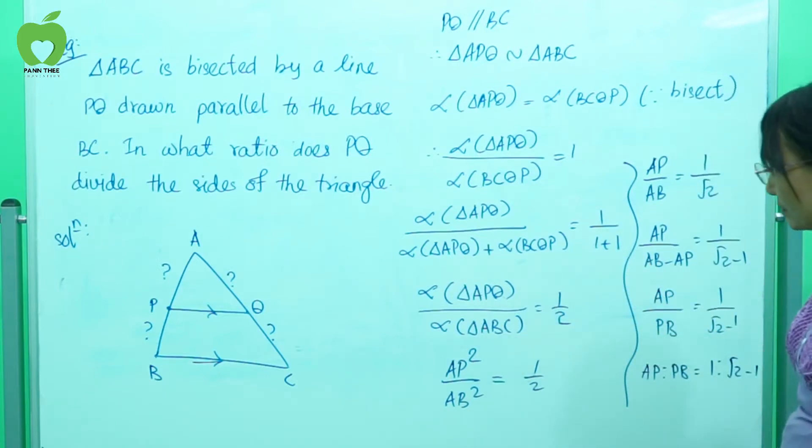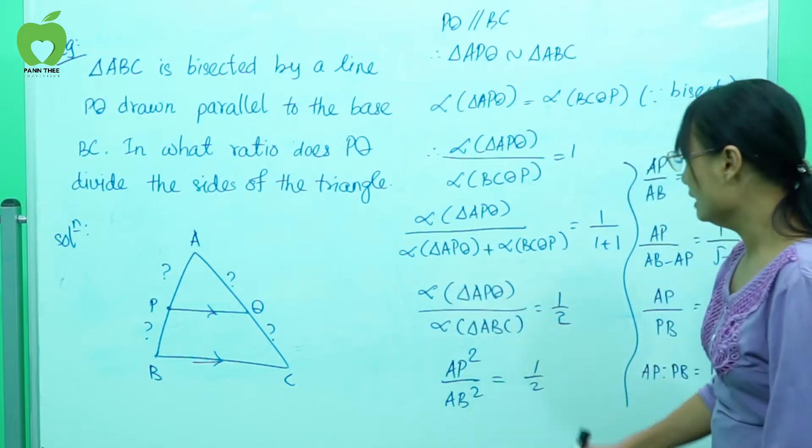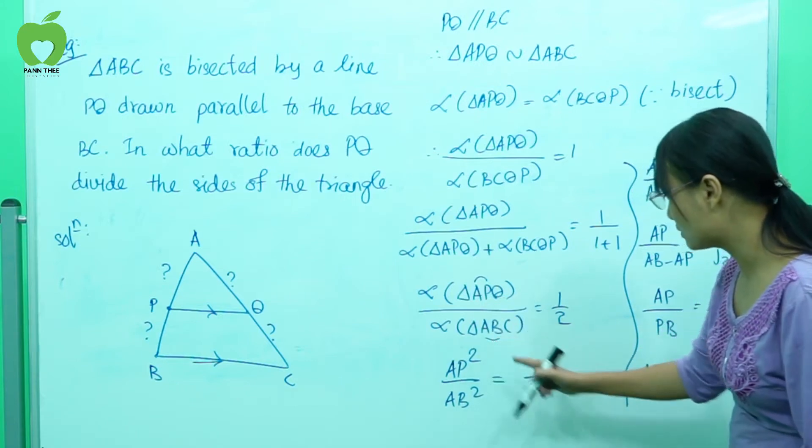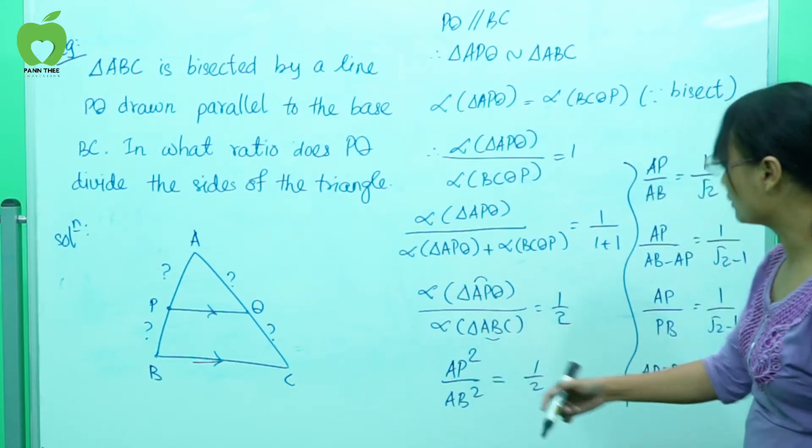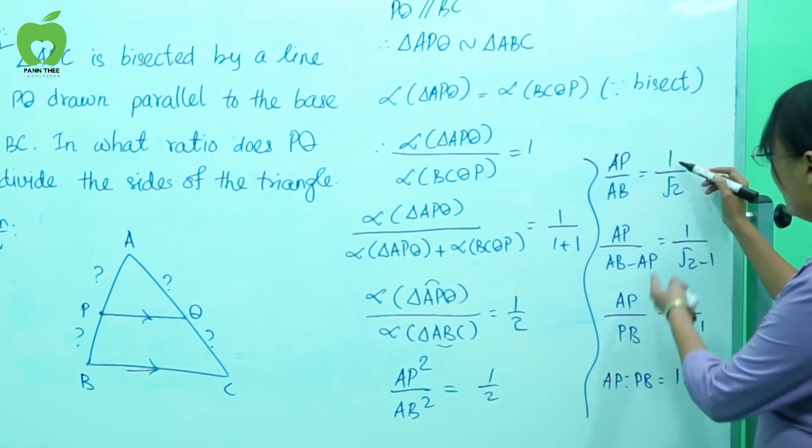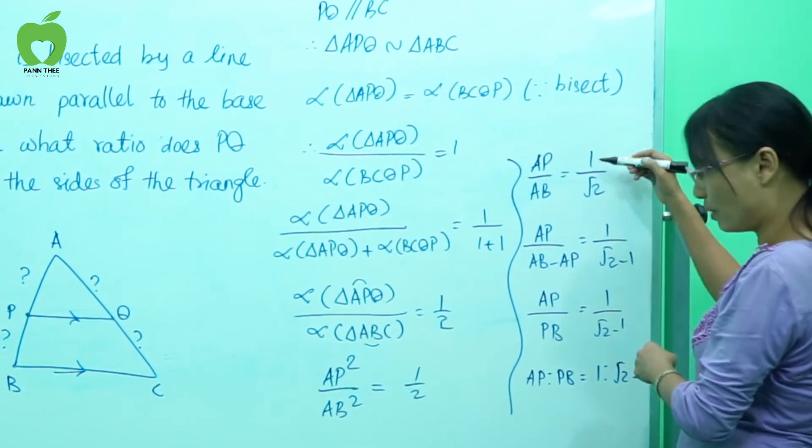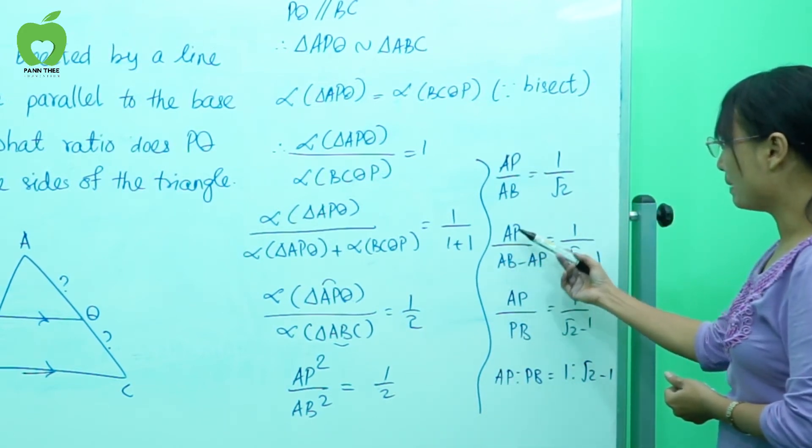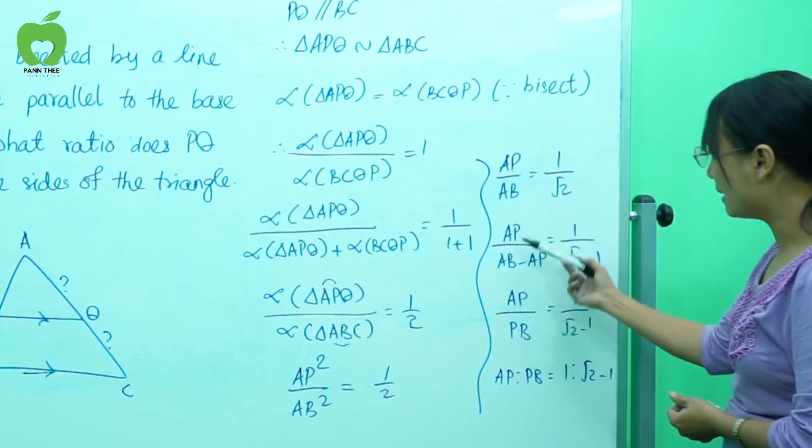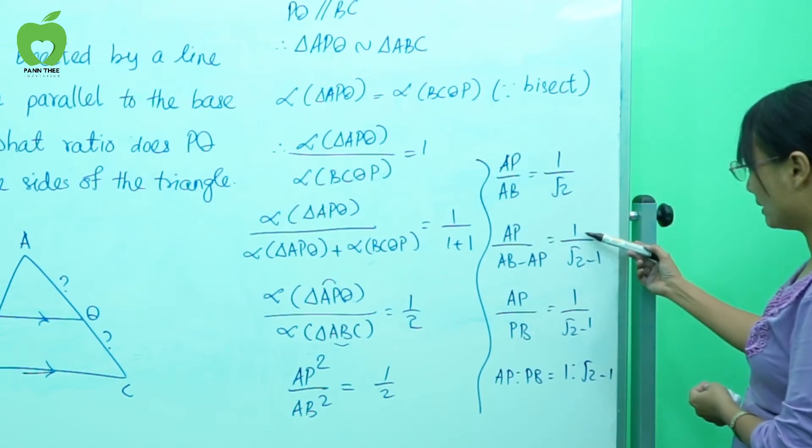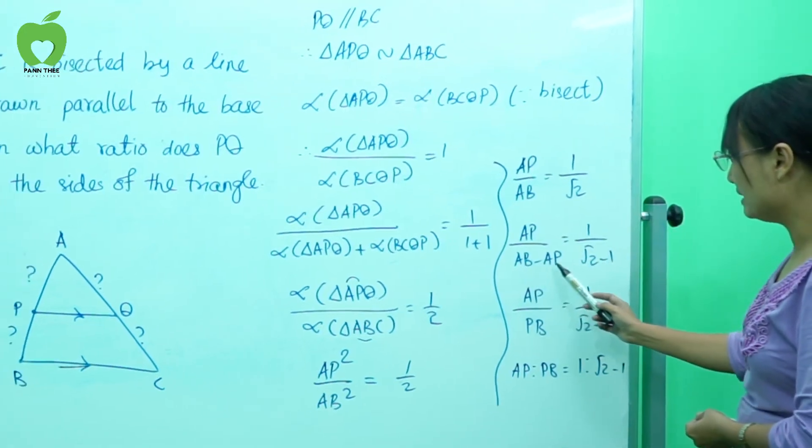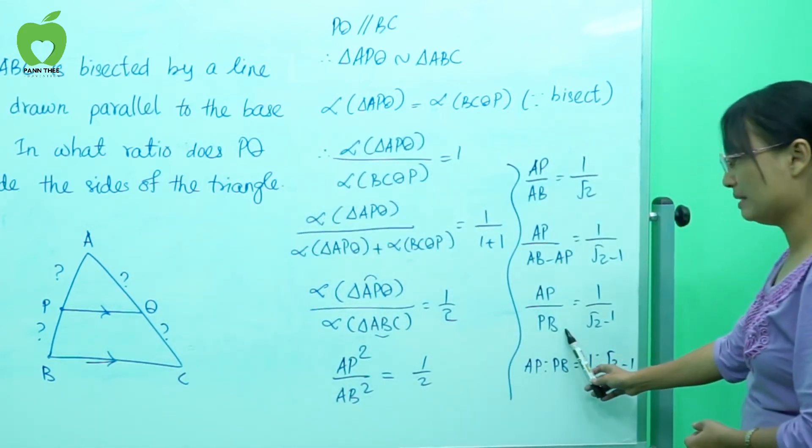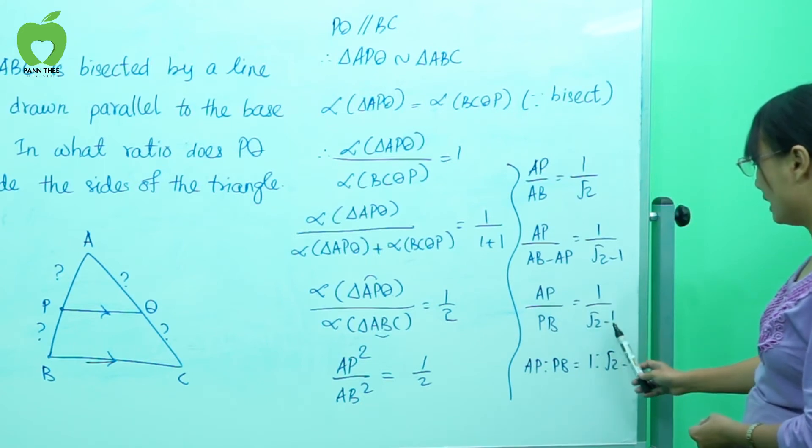So if you look at the area of triangle, the area of triangle is equal to 1 by 2. So if you look at the area of triangle, the area is equal to 1 divided by 4.